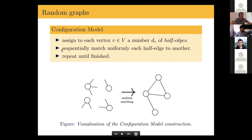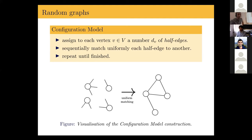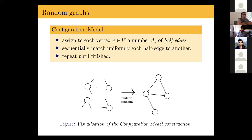The other model we will discuss is the configuration model, which is a construction to obtain uniform graphs with a given fixed degree distribution. The construction goes like this: suppose I want to construct a uniform graph where the first vertex has a fixed degree, the second has another, and so on. I assign to each vertex a number of half-edges equal to the desired degree, then sequentially match half-edges uniformly with other half-edges until there are none left, establishing an edge for each matched pair.